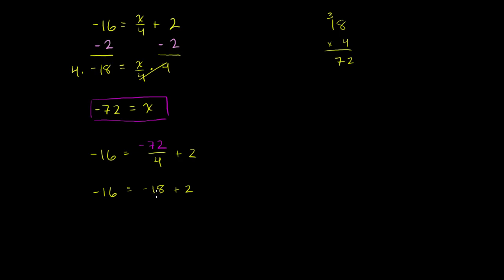The right-hand side, negative 18 plus 2, is negative 16. So it all comes out true — when x is equal to negative 72, the right-hand side does indeed equal negative 16.